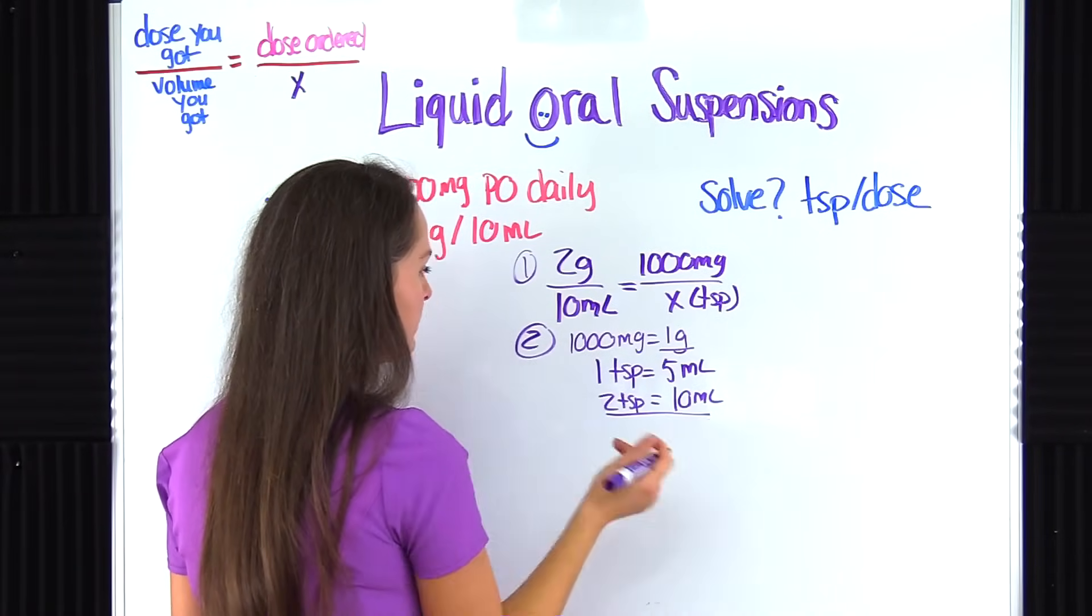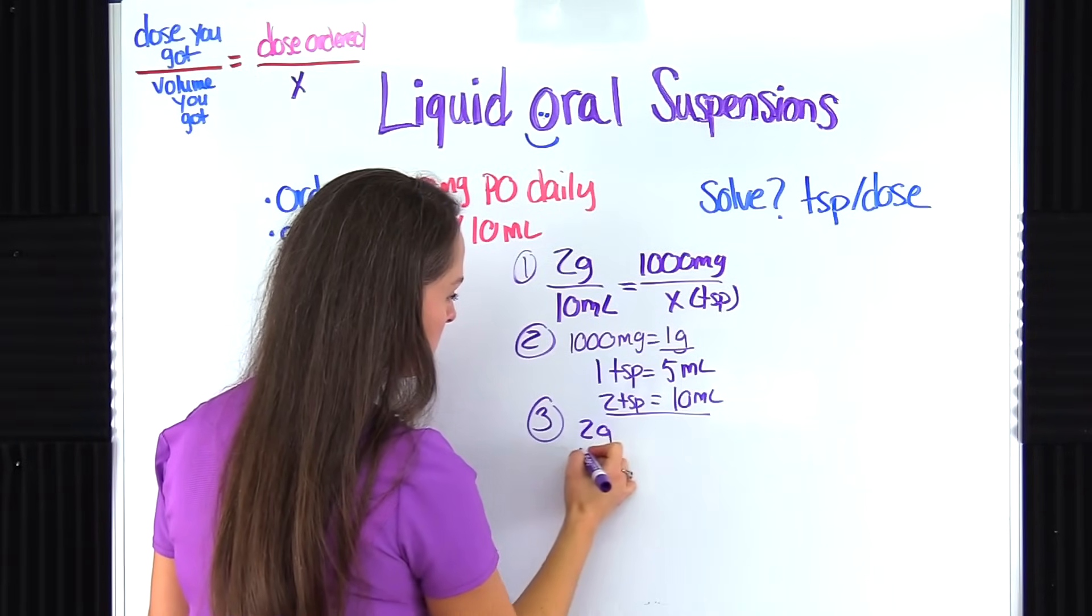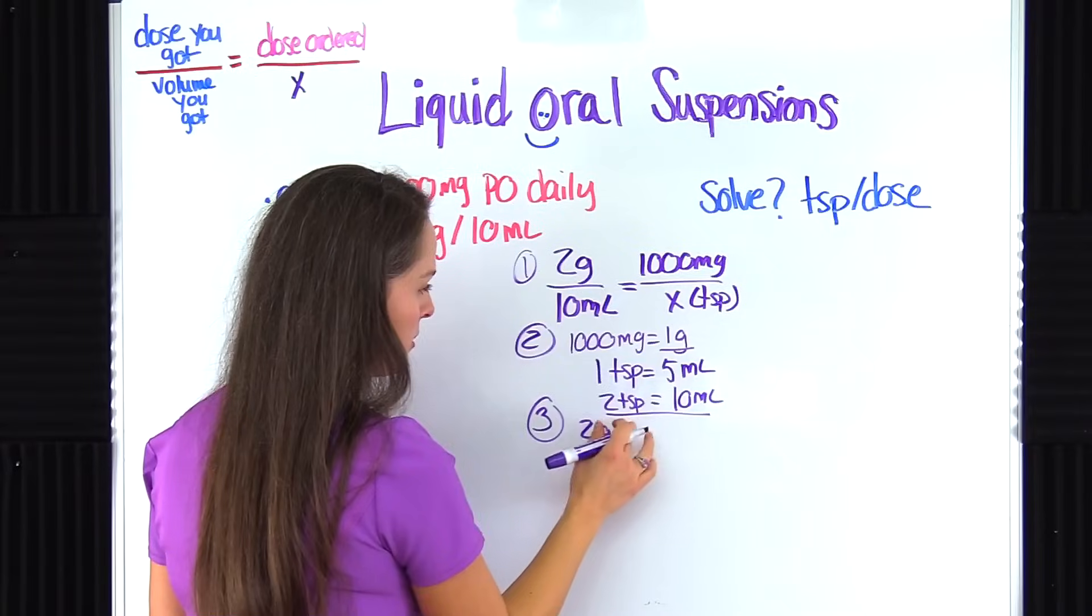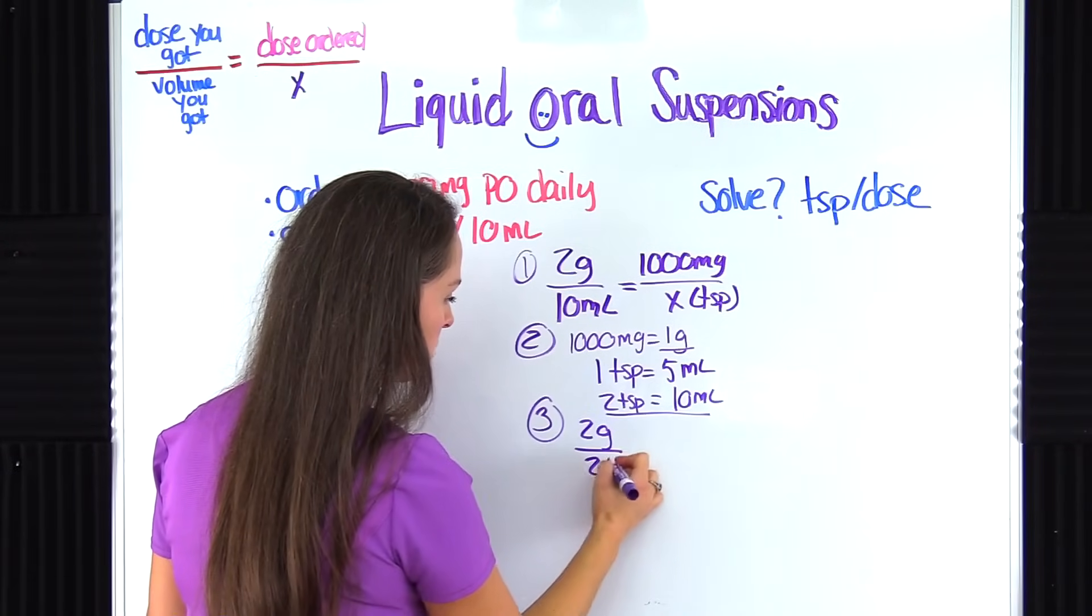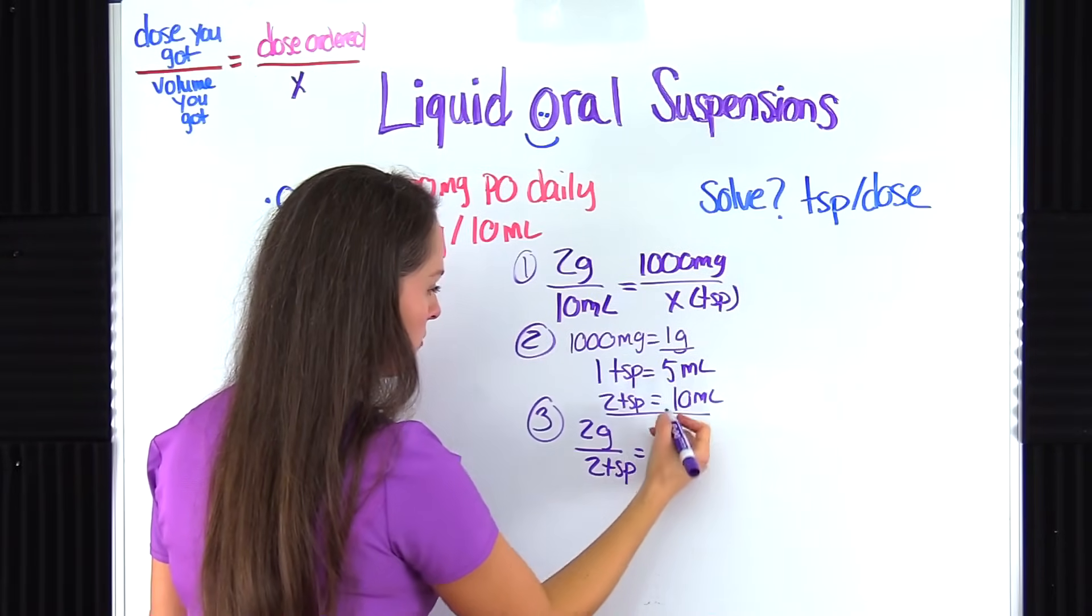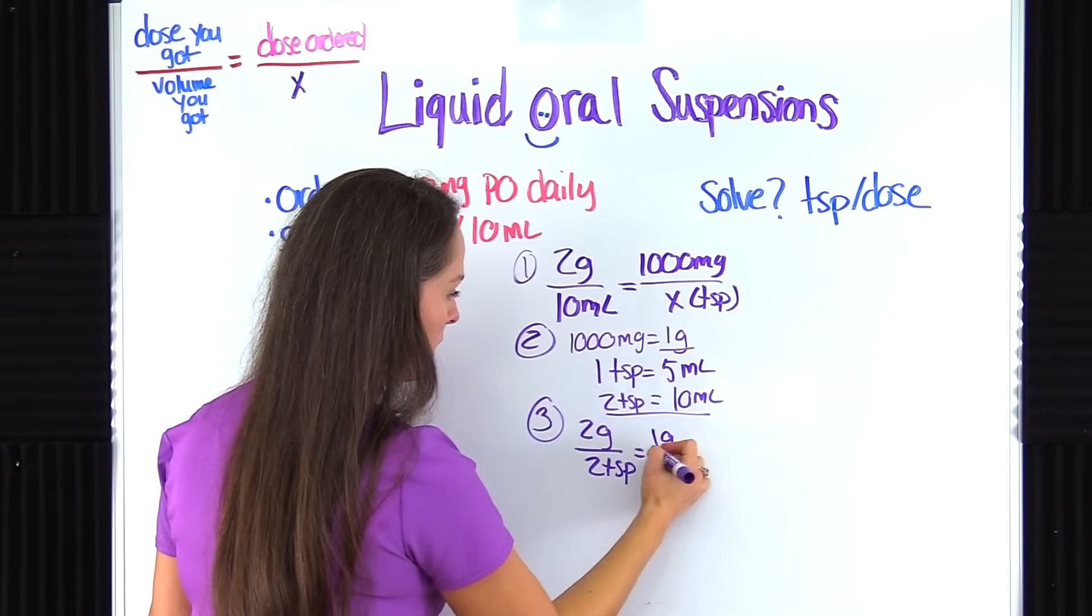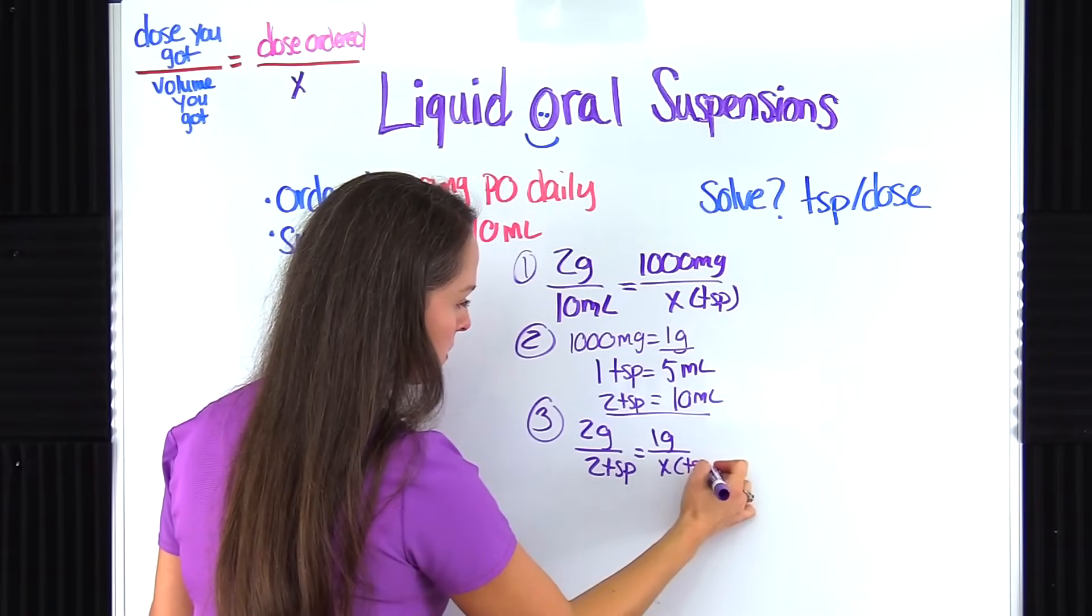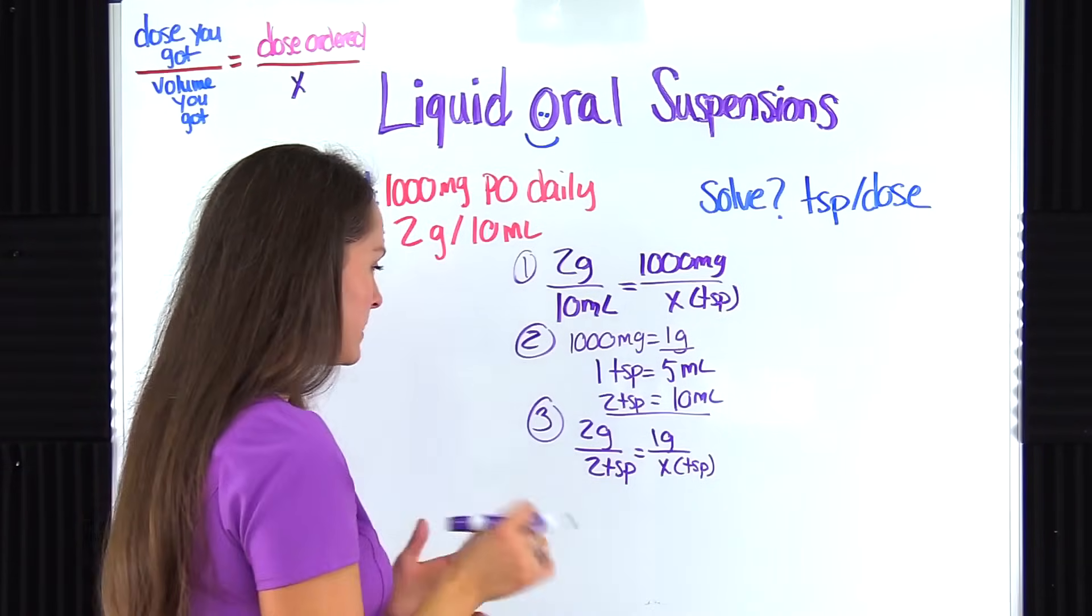Now let's rewrite our problem. I'm just going to underline what we need. Okay, so step three. Okay, so 2 grams. Our volume we've converted into teaspoons, so it will go 2 teaspoons equals—we've converted that over. That was what was ordered in 2 grams. So that'll be one gram over x, and we're trying to figure out teaspoons. So let's just check. It matches. It matches. Oh, we're good to go.